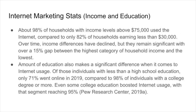In terms of income and education, about 98% of households with income levels above $75,000 use the internet, compared to only 82% of households earning less than $30,000. Over time income differences have declined, but a roughly 15% gap remains between the high and low categories. The amount of education also makes a significant difference — only 71% of those with less than a high school education are online, compared to 98% of people with a college degree or more. Even some college education boosts internet use to about 95%.